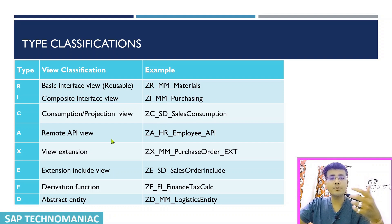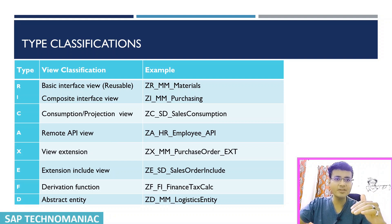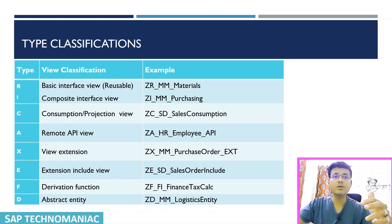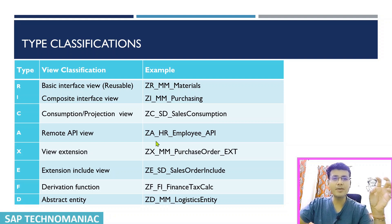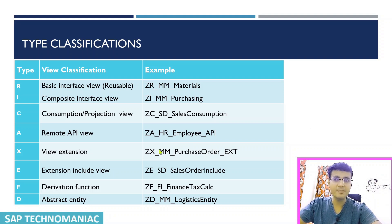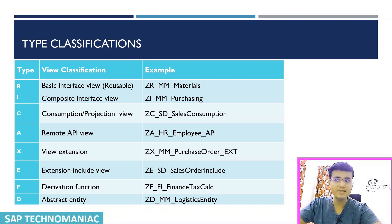Remote API is another important type. If you want to consume another service in your RAP application, you create a CDS view or custom CDS entity for that — you can use ZA, where A means we are consuming an API from outside and it can be triggered as a remote API. For view extensions where you extend existing CDS views with annotations or associations, use ZAX. If you just want to include fields, use ZE.